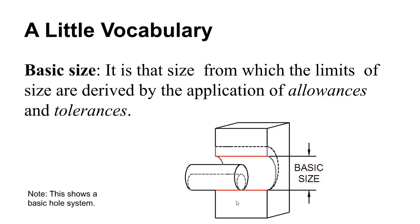Talking about a half inch hole and a half inch shaft — that's a nominal size. You may call it half an inch, but there's essentially zero probability of ever producing a hole or a shaft that is exactly half an inch in diameter. What we talk about is the basic size. The basic size may indeed be half an inch, but we have to allow some kind of tolerance to accommodate that.